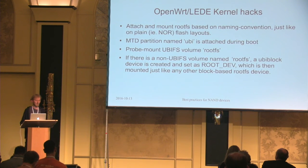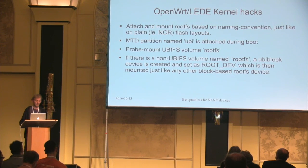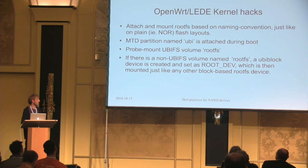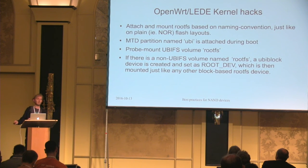Then we need to probe-mount a UBI volume — it has to be called RootFS and then we try to mount it. Similar to NorFlash, there might be different file systems. We might have a writable file system containing the whole root file system, which is useful during development. But in production and on most commercial devices we have a read-only file system with an overlay volume on top — in that UBI volume you'd find a squashFS. We created root dev hacks in the kernel to probe the file system type and accordingly mount either the UBI device for UBIFS or create and mount a UBI block device so squashFS can be mounted.